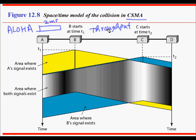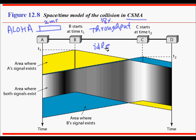Aloha throughput is just around 18%, because you never check whether the channel is busy or not. In reality it's easy to check: if the channel is idle, no one is using it and there will be no energy signal; if someone is transmitting there will be more power; and if there is a collision there will be even more power. So you sense the channel based on energy. This is carrier sensing — if no one is transmitting, you transmit your frame.